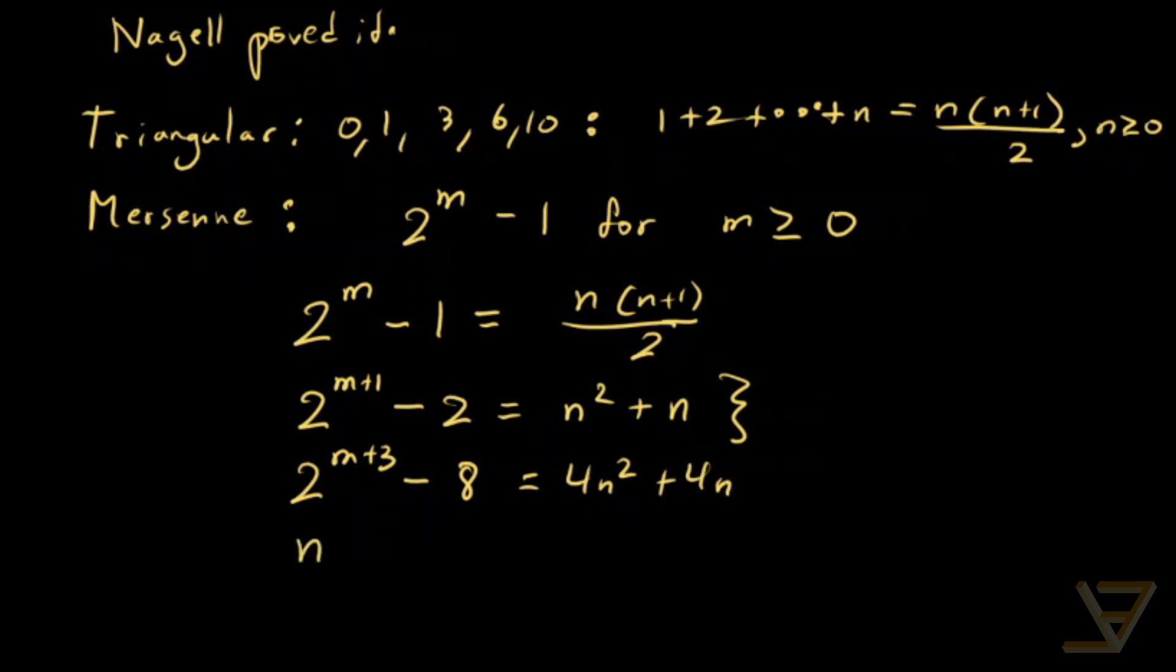And then we get 2 to the m plus 3 minus 7 is equal to 2n plus 1 squared.